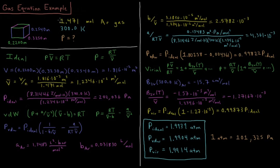So our setup is that we've got 1.471 moles of argon gas at 300 Kelvin in a box with the following dimensions. What is the pressure of this system according to the Ideal Gas Law, the Van der Waals Equation of State, and the Virial Equation of State?